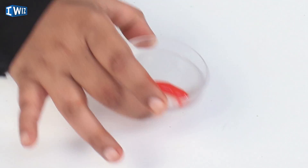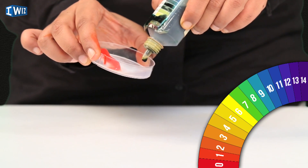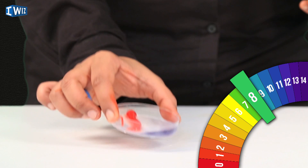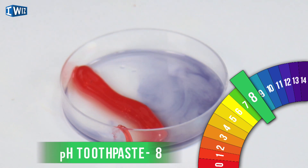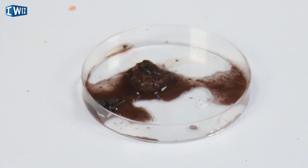The breakdown of food doesn't just happen in the stomach — it also happens in the mouth, which has a very acidic environment. That is why there is a lot of tooth decay. To protect ourselves against this acidic environment, toothpastes are designed to be basic. Putting a little indicator into toothpaste turns it blue, which is why we need to brush our teeth regularly to prevent tooth decay.